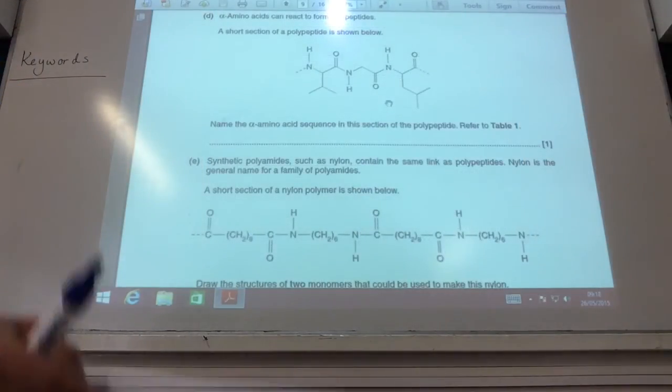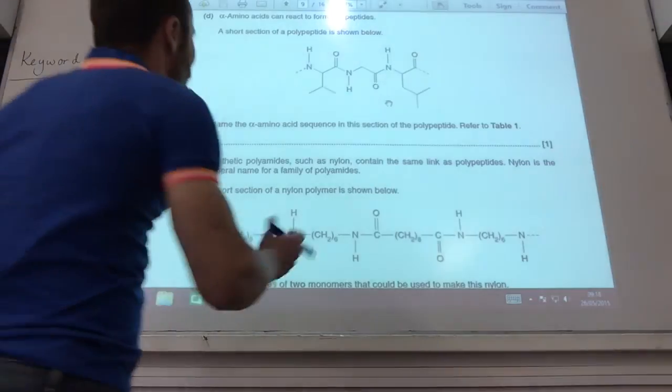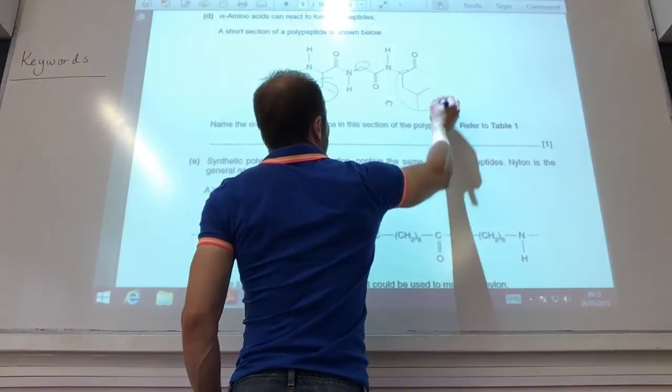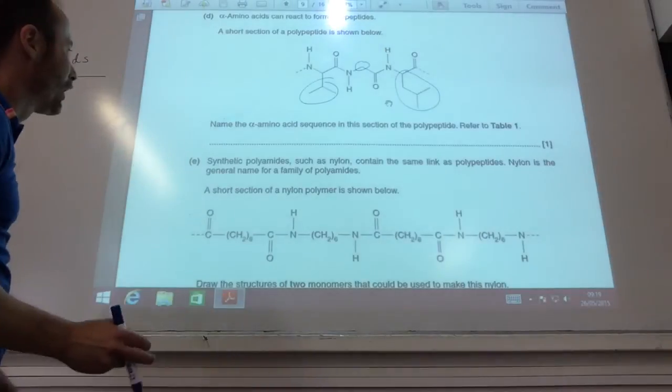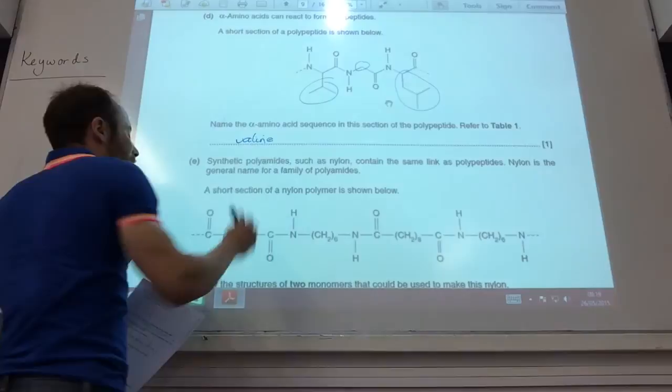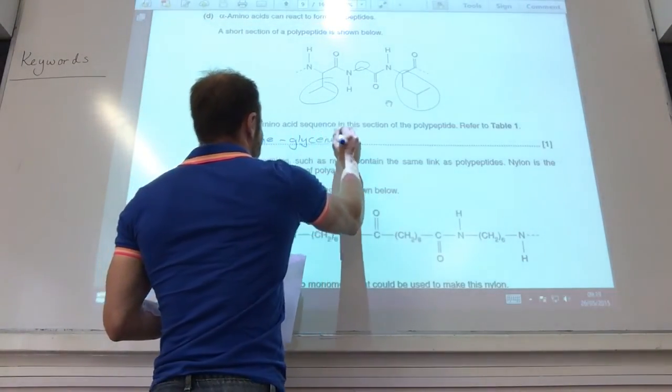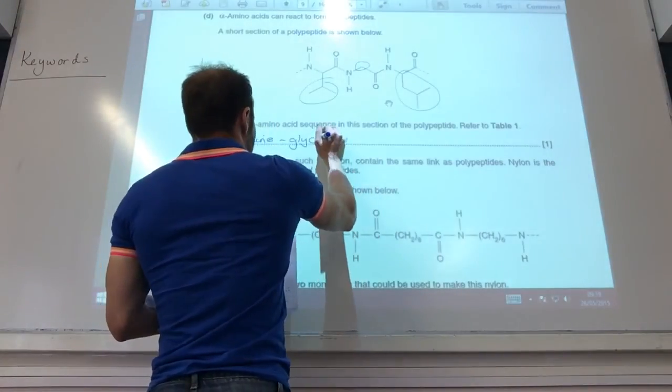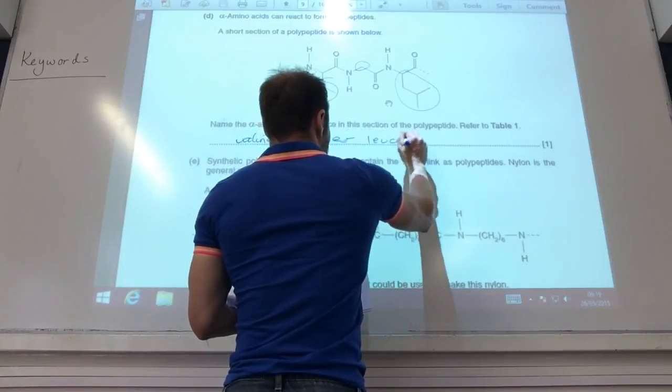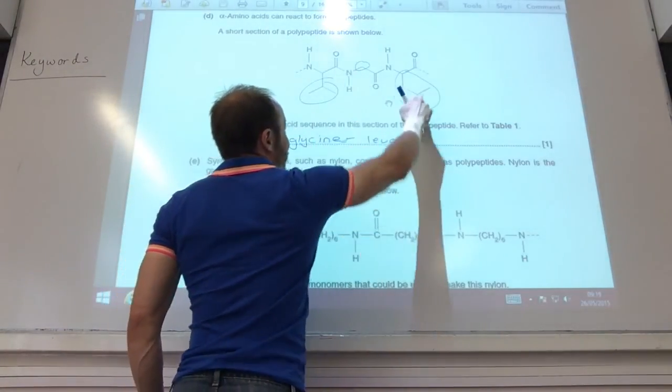Okay, for the next one then it's given me a polypeptide and I need to identify the alpha amino acids in it. So you're looking for the R groups here that are coming off that central component. If you do that related to the table on the opposite side, you see it is actually in that order. So that's valine, that is glycine, and that is lysine there.